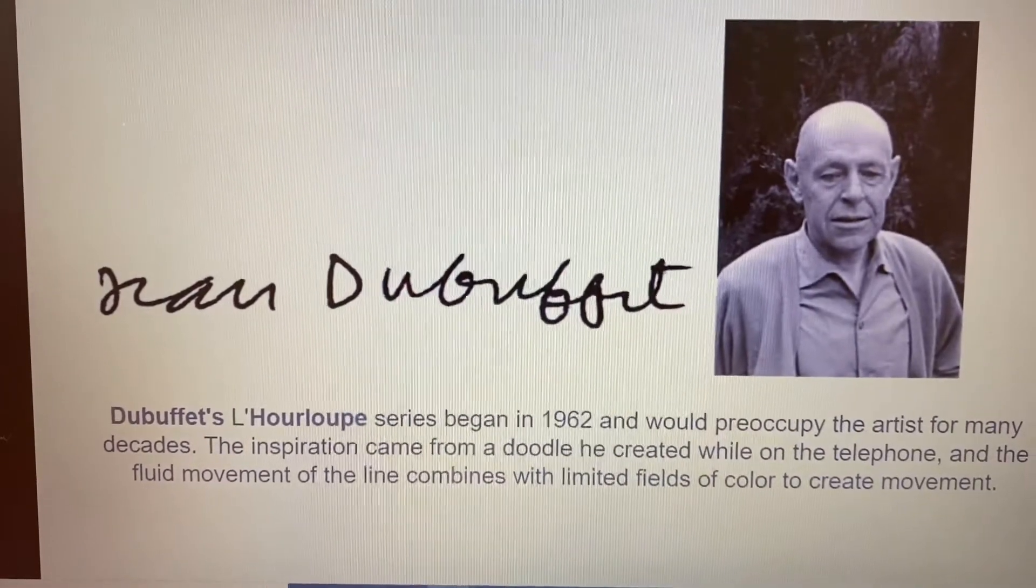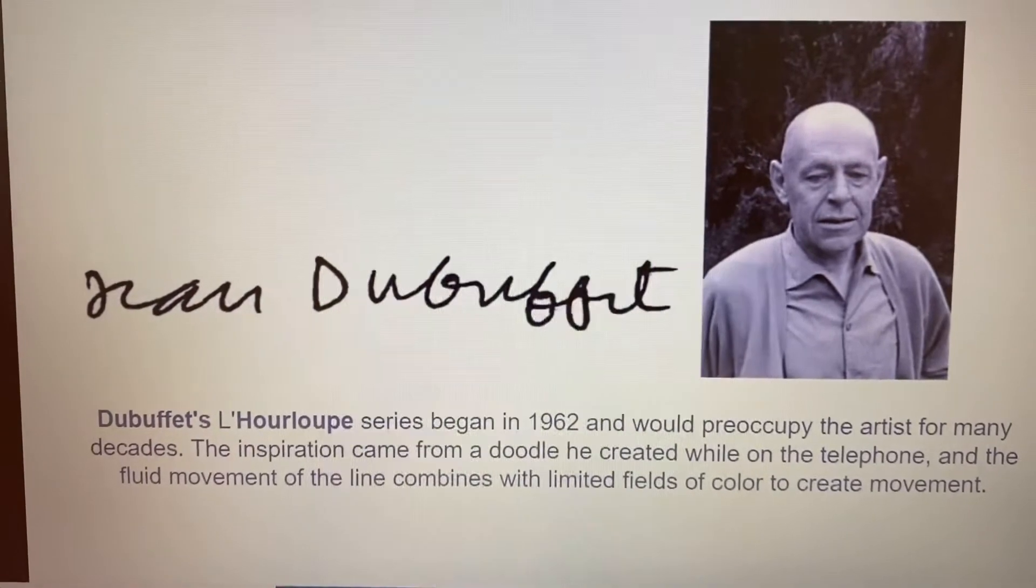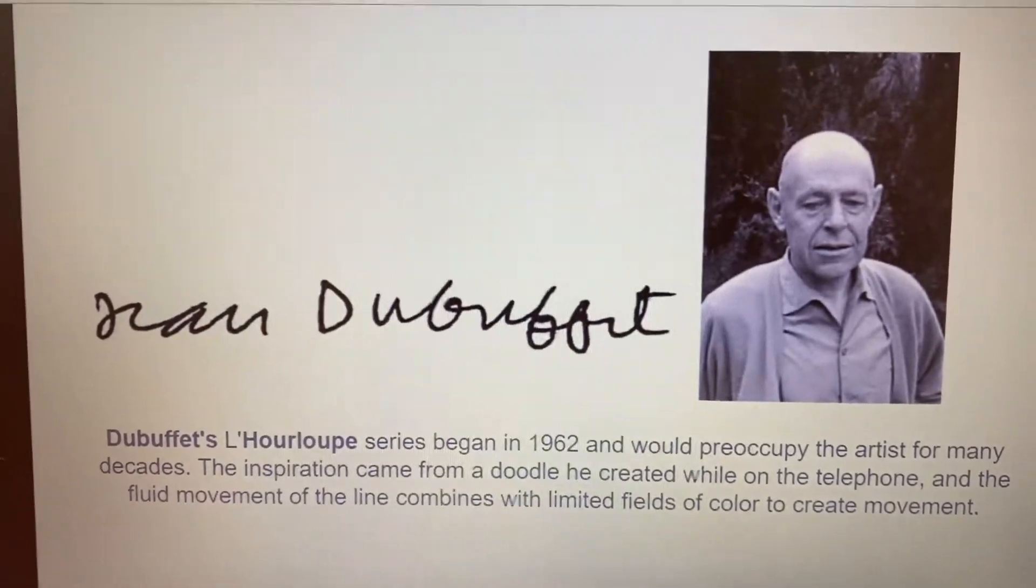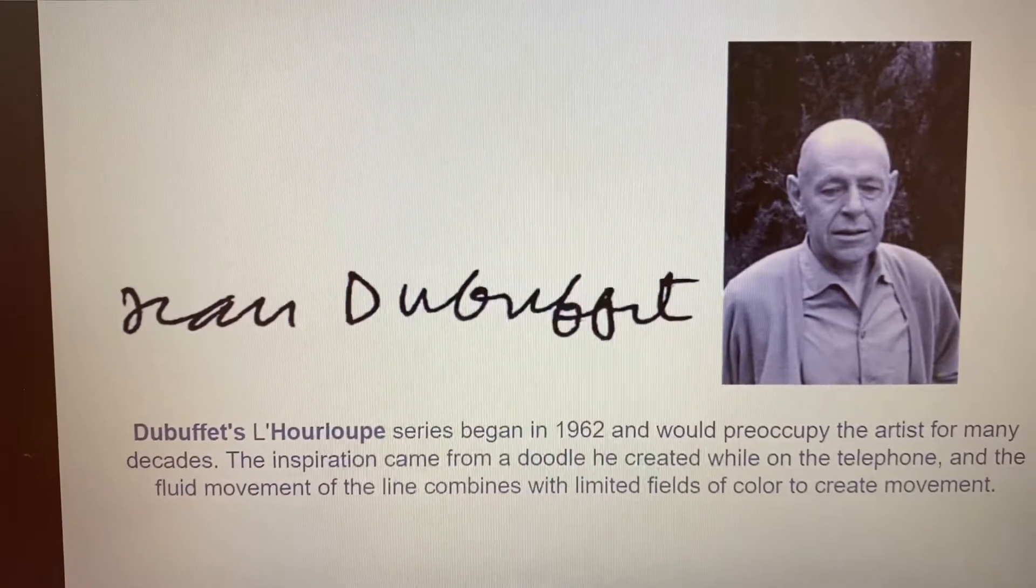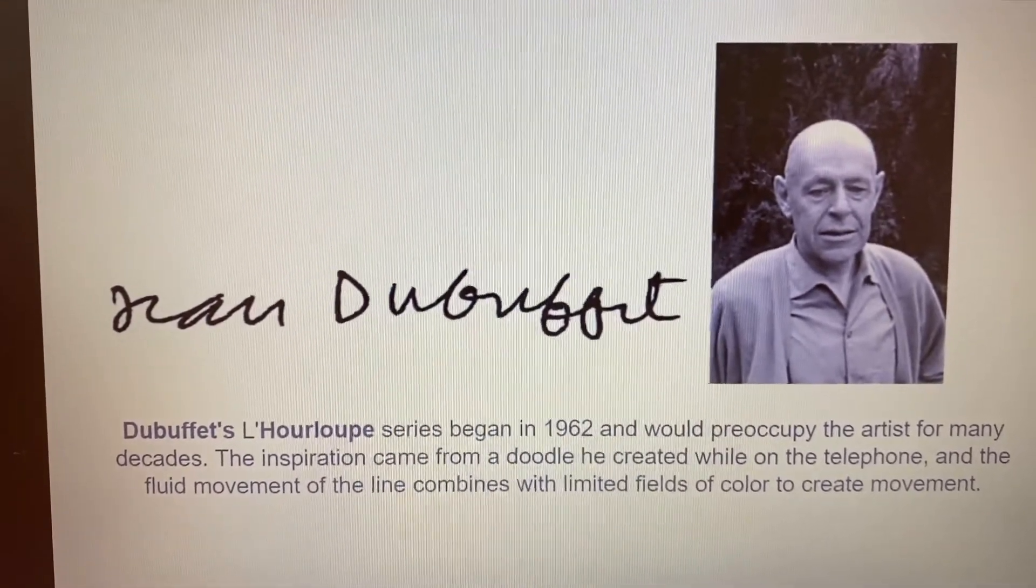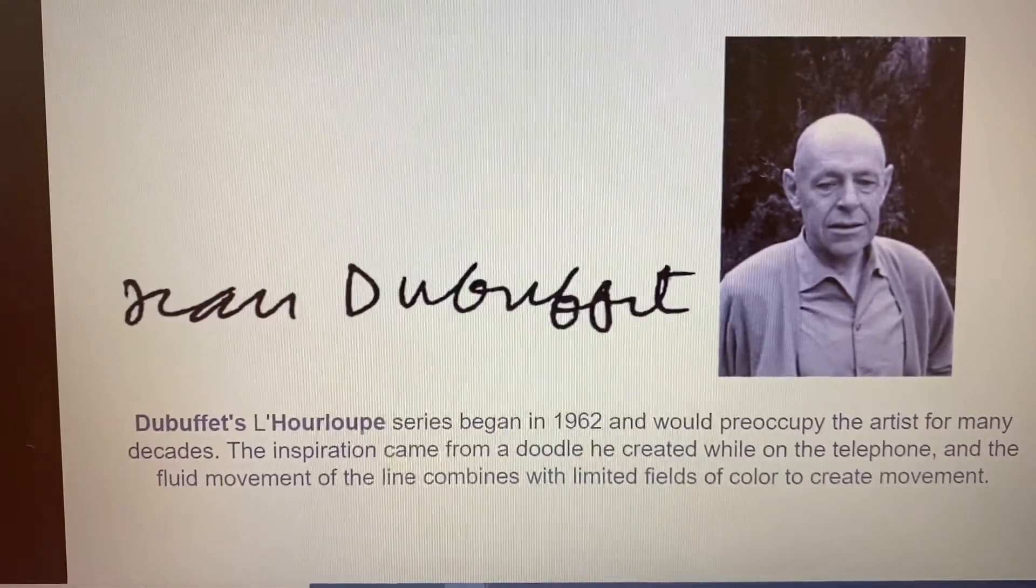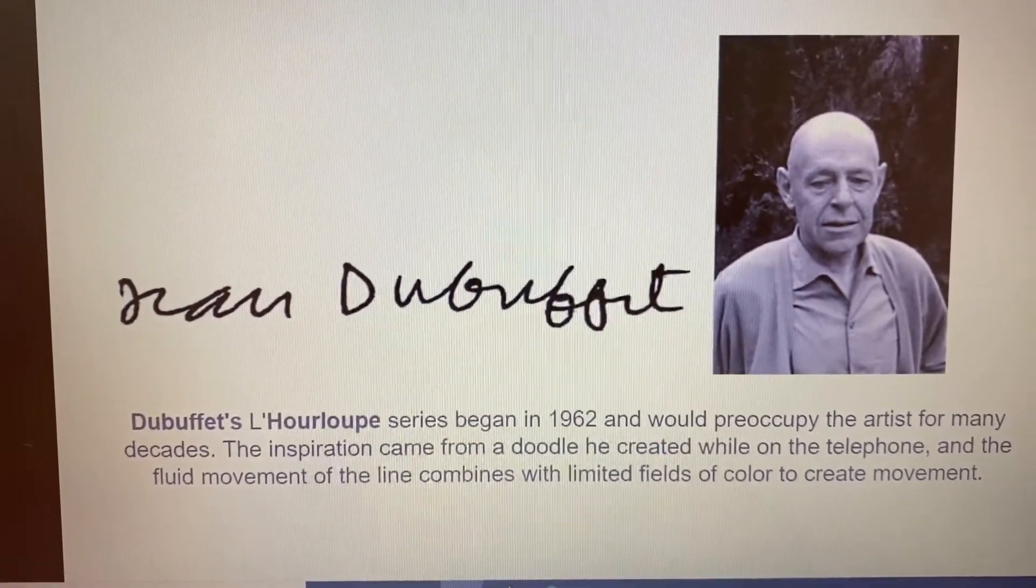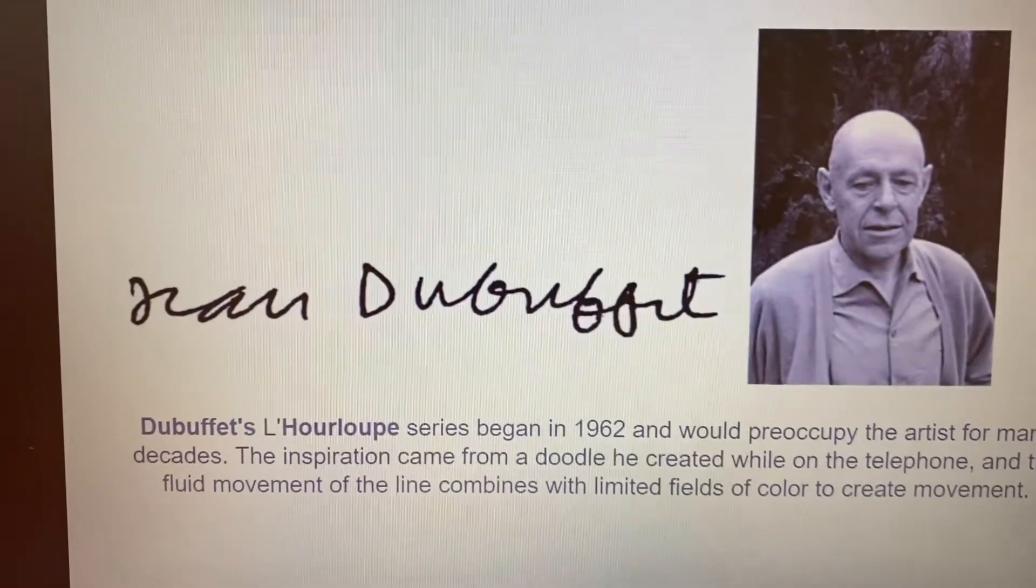Jean Dubuffet was a French artist who was born in 1902. He developed this style called Hourloupe, and this is a series that began in 1962 and would preoccupy the artist for many decades. The inspiration actually came from a doodle he created while on the telephone, and the fluid movement of the lines combined with limited fields of color create a sense of movement.